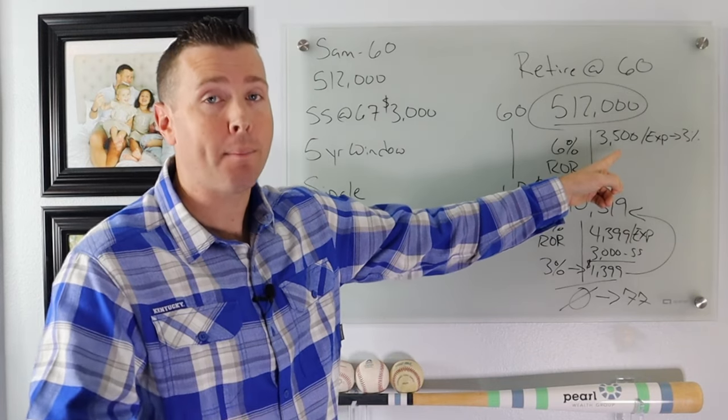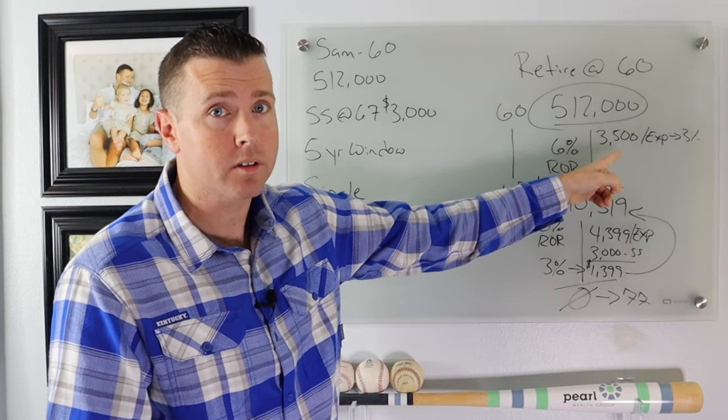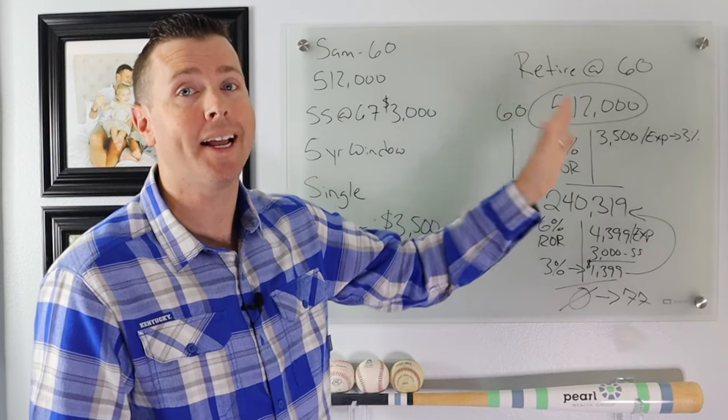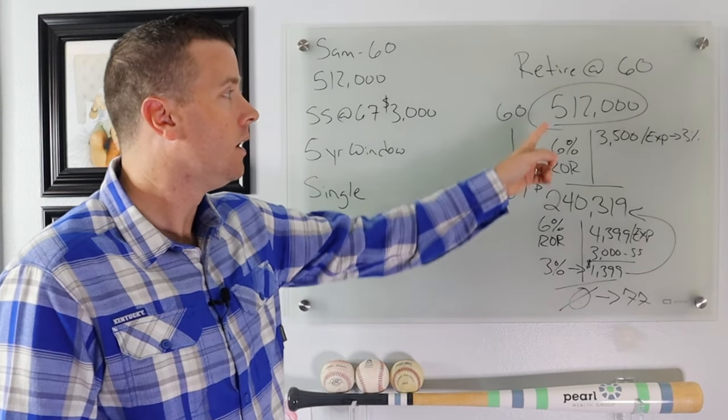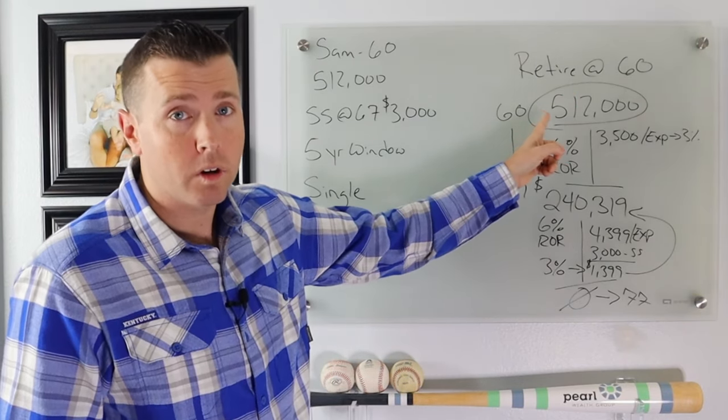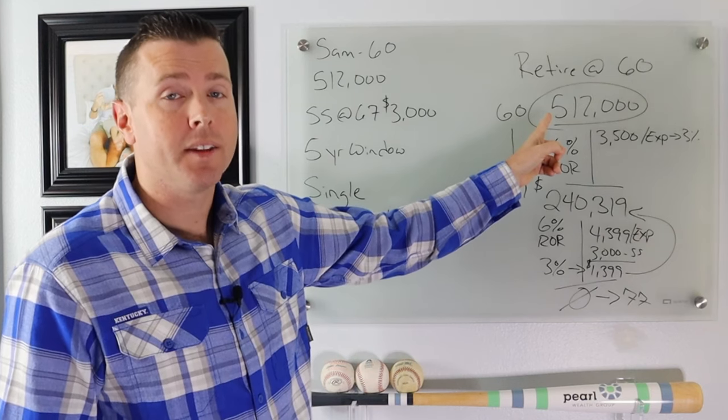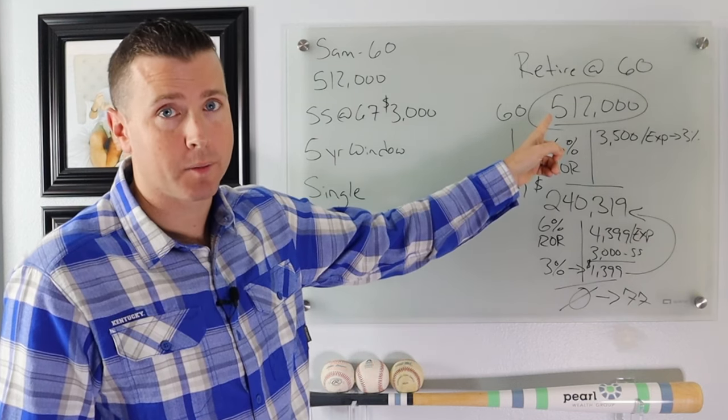But taxes go up, property insurance goes up, food costs go up, healthcare costs go up. So we can control that as much as we possibly can. The only thing we can do is work longer and increase the amount of money that we have saved for retirement.